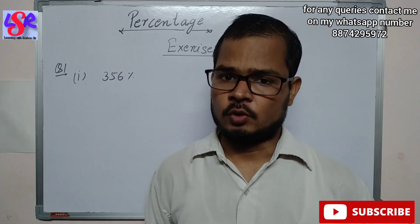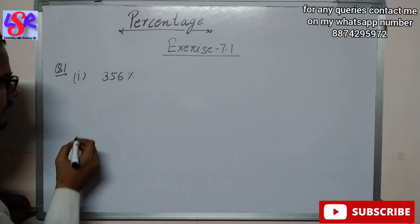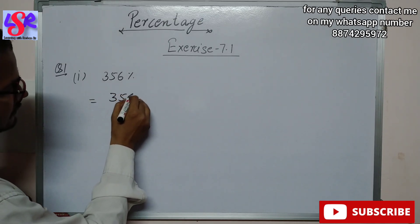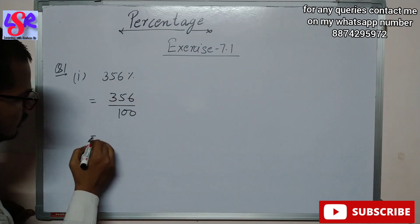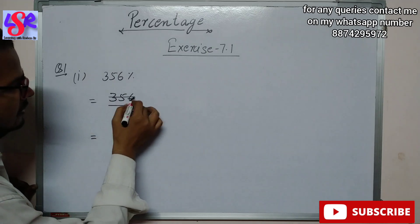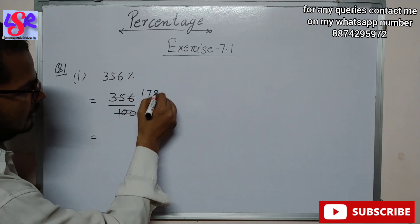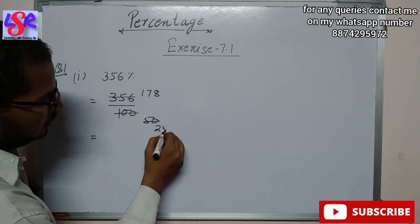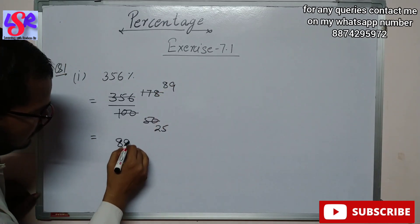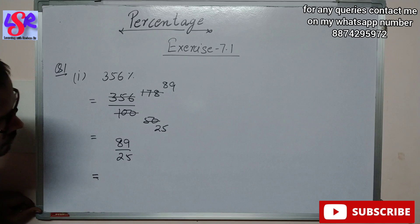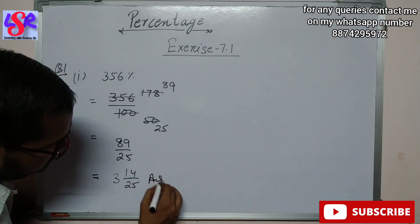Now let's start with Exercise 7.1, Question 1 — we have to convert the given percentage into fraction form. So 356% can be written as 356 upon 100. We have removed the percentage sign. Now we reduce it to the lowest term: dividing by 2 gives 178 upon 50, then dividing by 2 again gives 89 upon 25, which can also be converted into mixed form as 3 whole 14 upon 25.